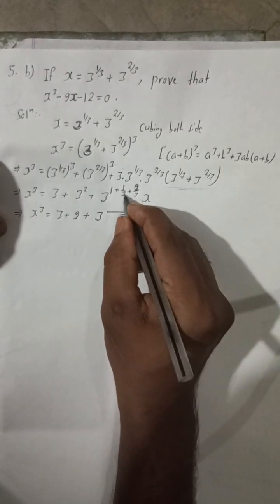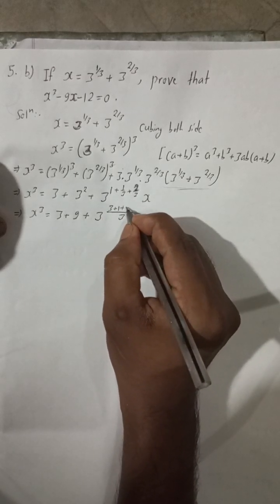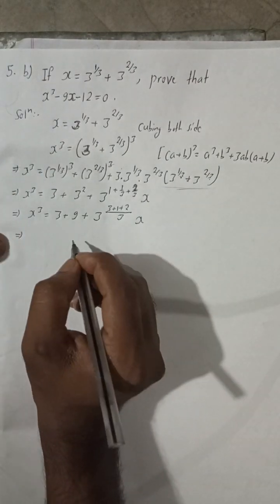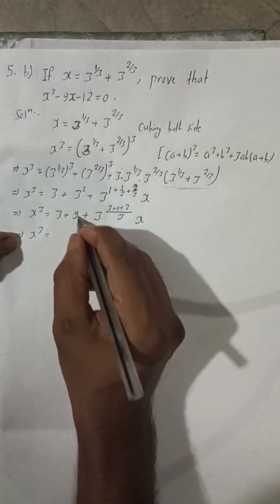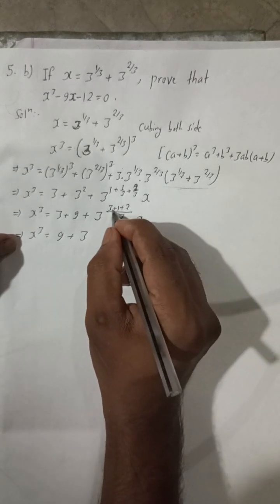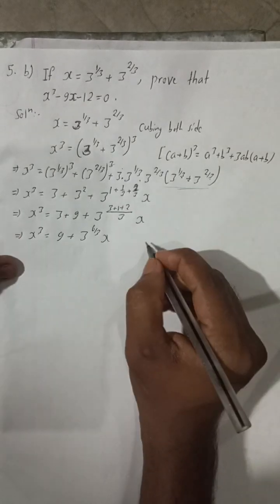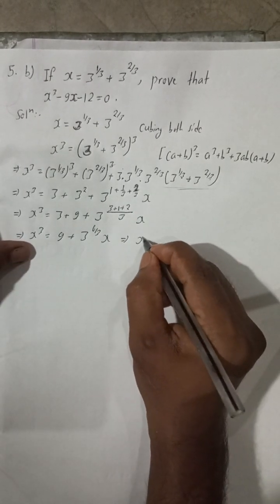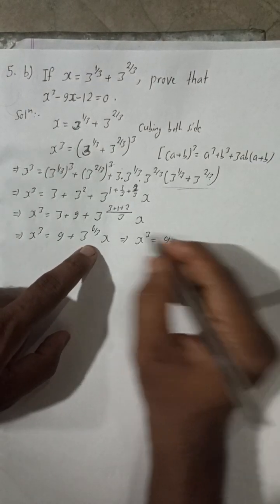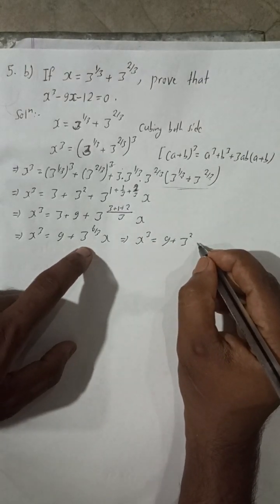So x cubed equals 3 plus 9 plus 3 times — adding the fractional exponents: 1 by 3 plus 2 by 3 gives 3 by 3 which is 1, so 3 to the power 1 equals 3 — times x. That gives x cubed equals 9 plus 3 squared times... simplifying further: x cubed equals 9 plus 2 times 3 times x, i.e., x cubed equals 9 plus 3x.